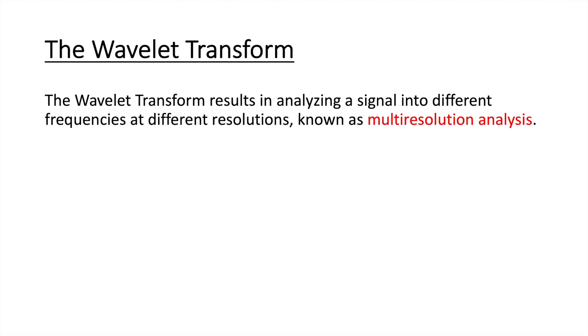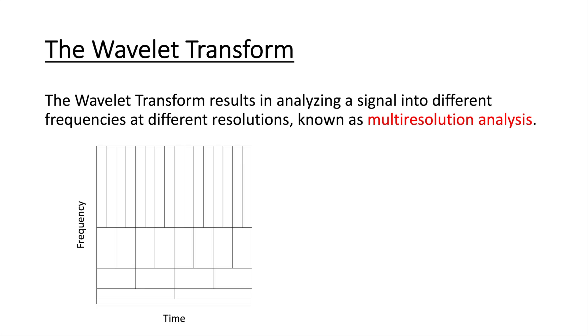The wavelet transform results in analyzing a signal into different frequencies at different resolutions. This is known as multi-resolution analysis. So looking at the frequency time plane for a wavelet transform, we see that there is good time resolution, but poor frequency resolution at high frequencies. So up the frequency axis with high frequencies, the vertical lines are much denser. So that means good time resolution, but there are barely any horizontal lines, meaning low frequency resolution.